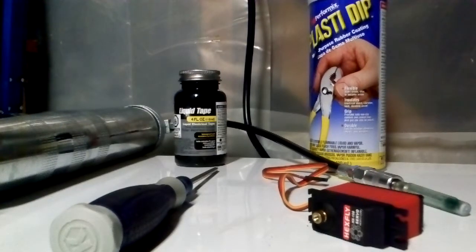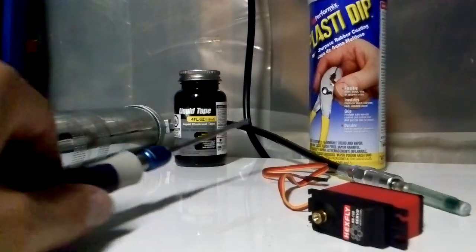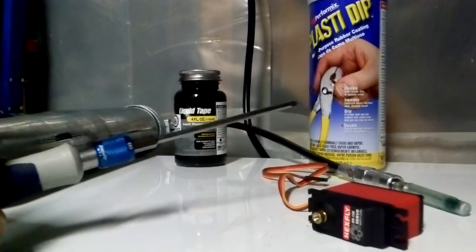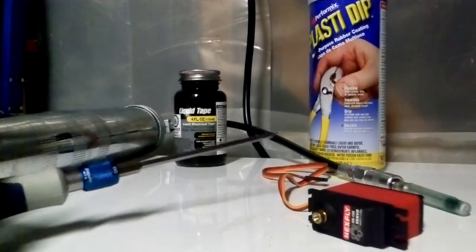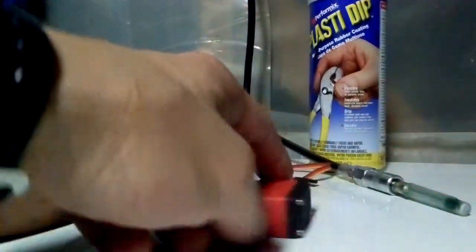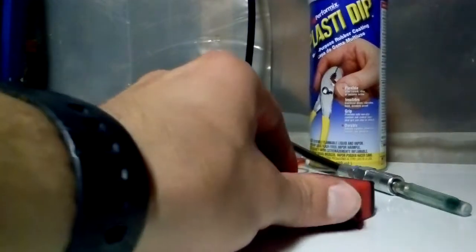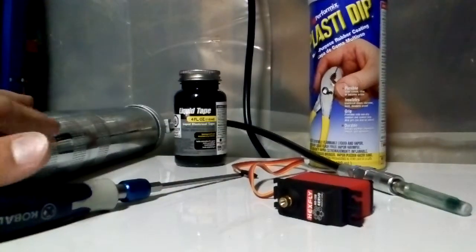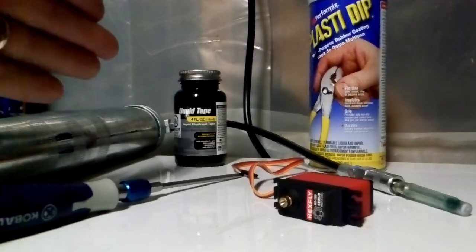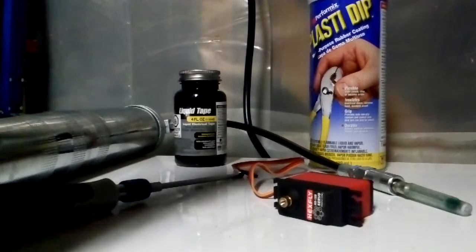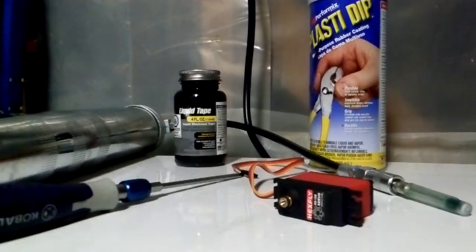Okay, I'm going to show you how to waterproof your servos for your RC trucks. Just a few supplies you'll need: a Phillips number one head which works great for removing the screws, waterproof grease, and I prefer liquid tape over the Plasti Dip, though a lot of people like the Plasti Dip.